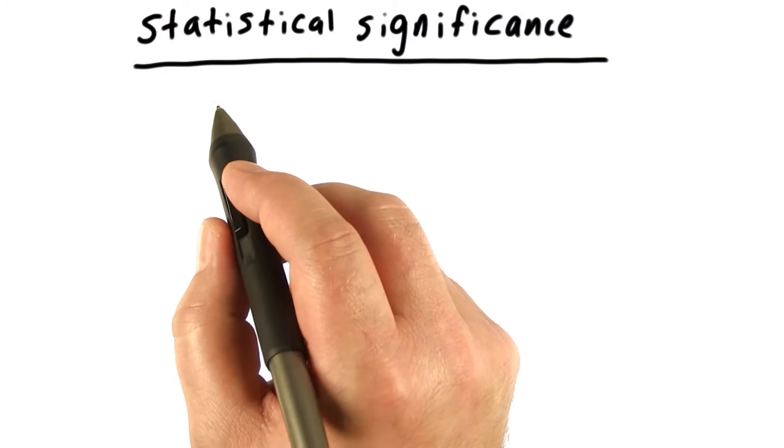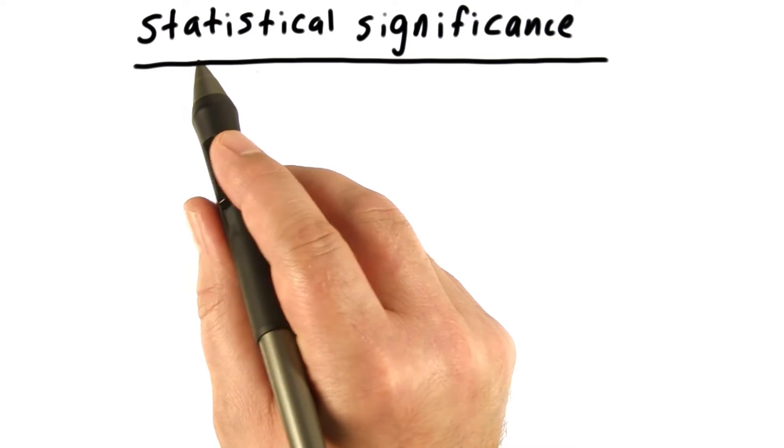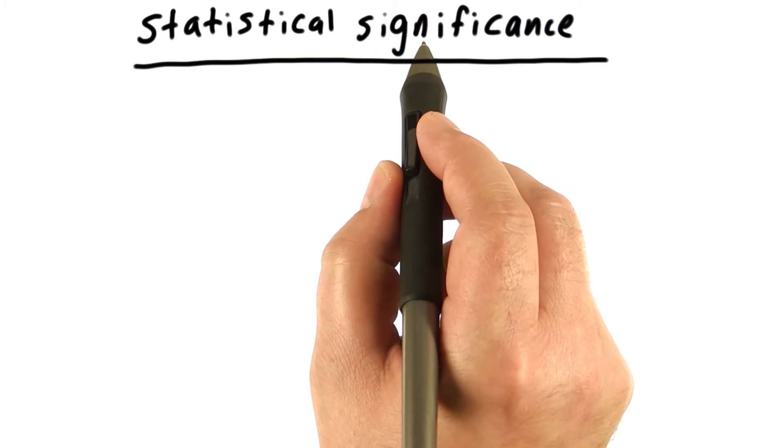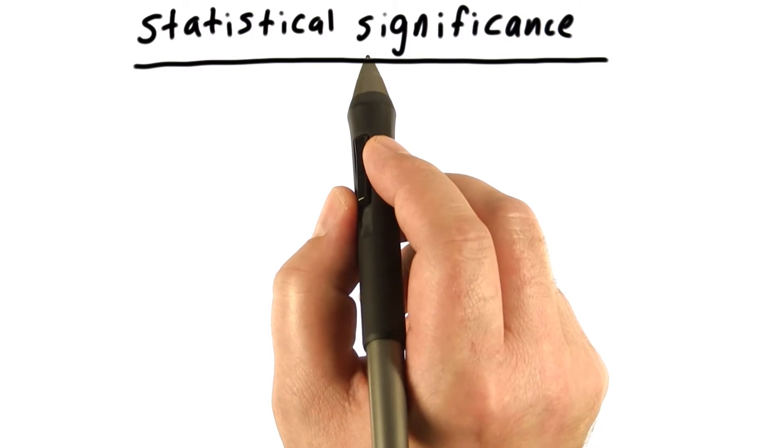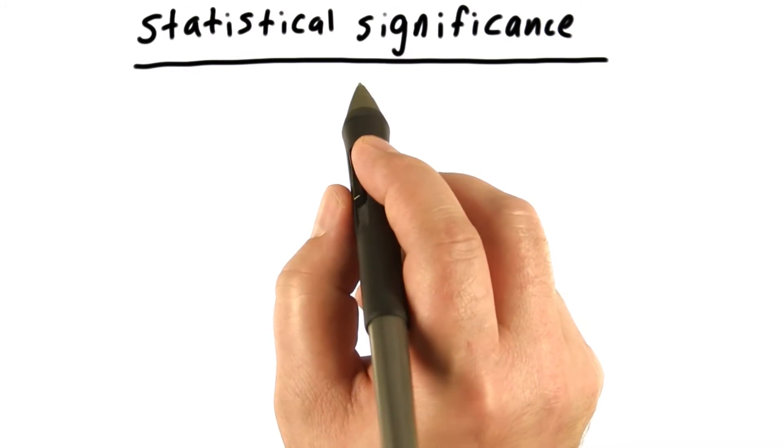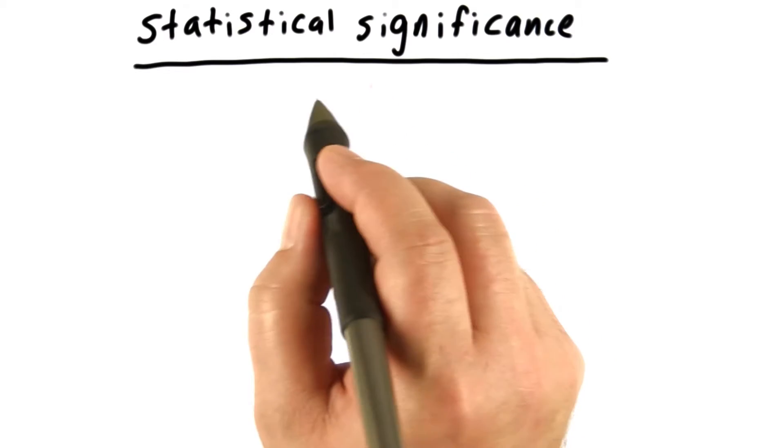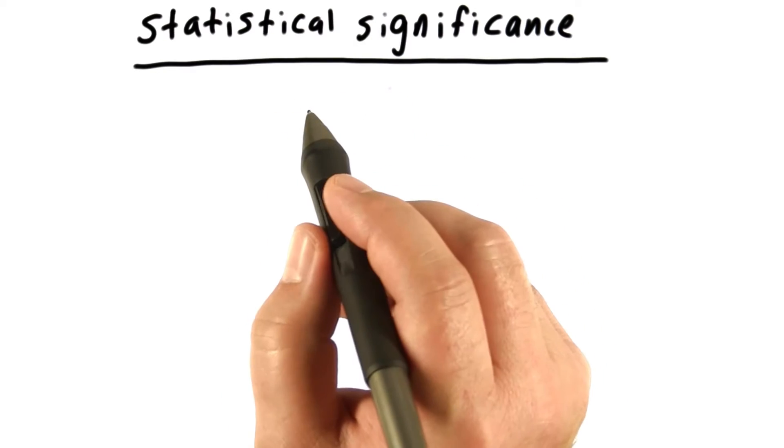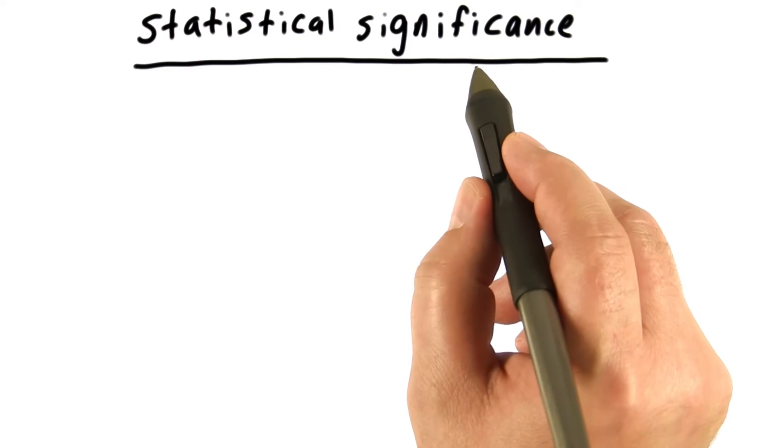Now I'd like to talk about a topic that is sometimes confusing for students, and that is the topic of statistical significance. Statistical significance in the area of statistics has a very specialized meaning, and it's kind of counterintuitive. It doesn't really fit with what we normally think of in terms of significance.